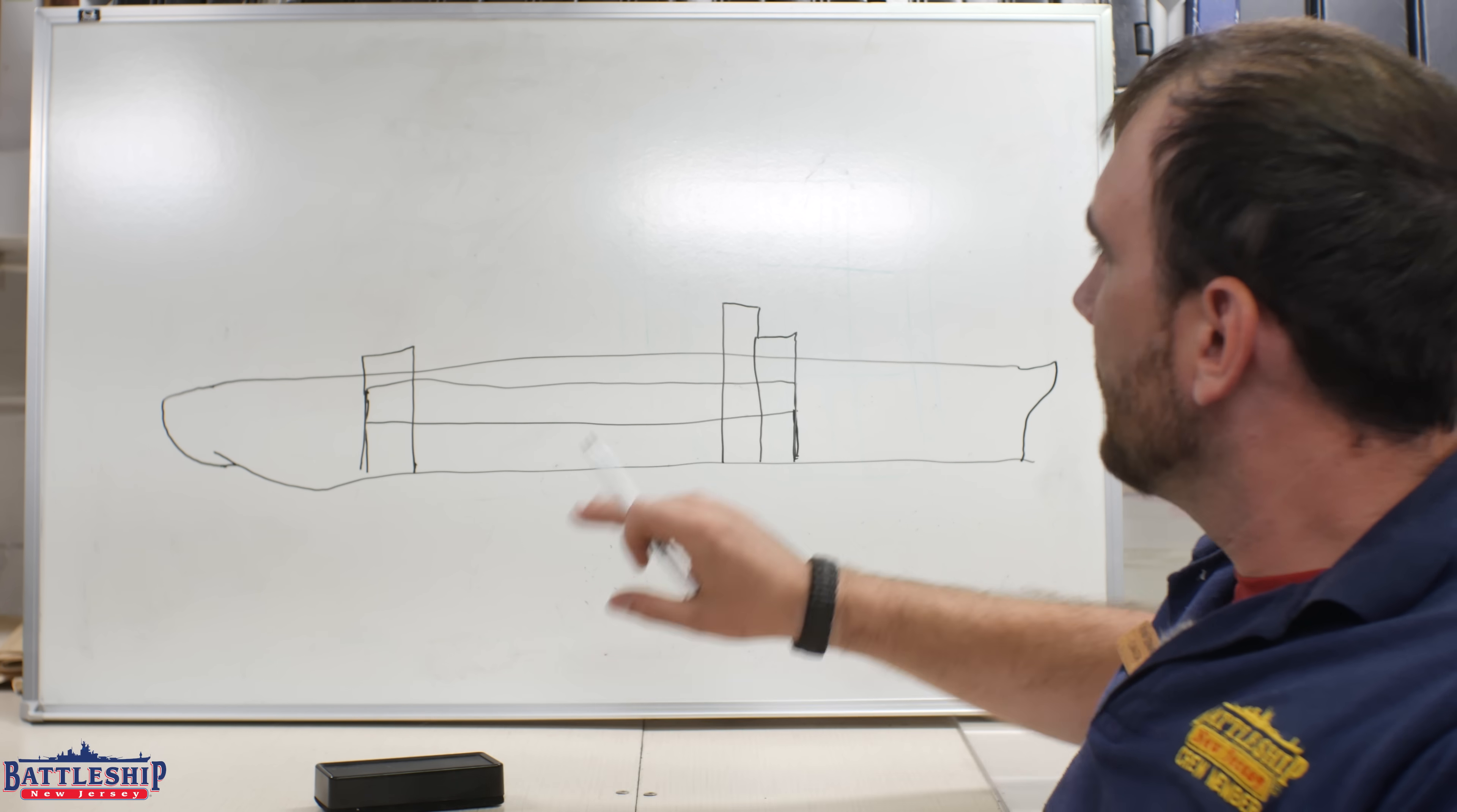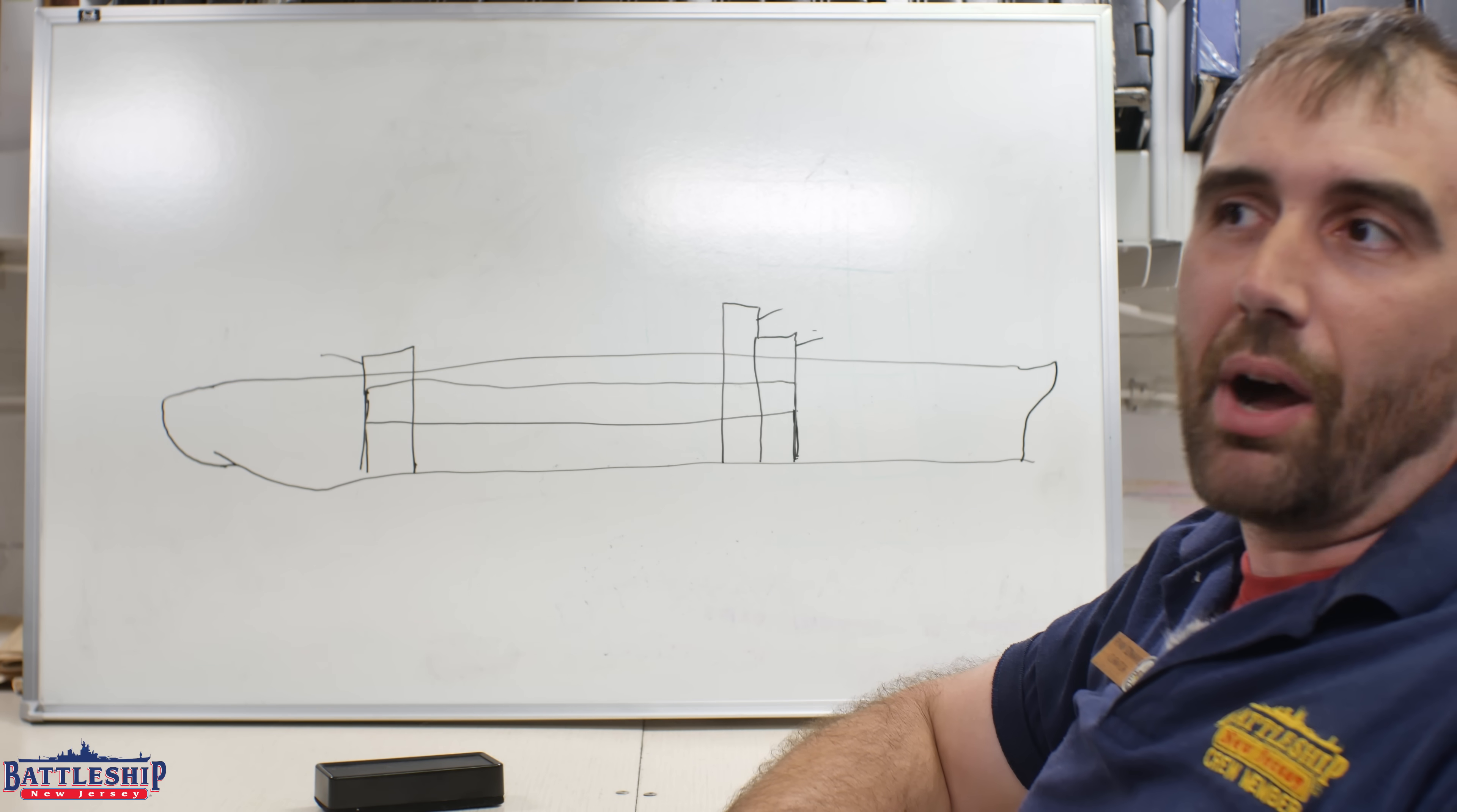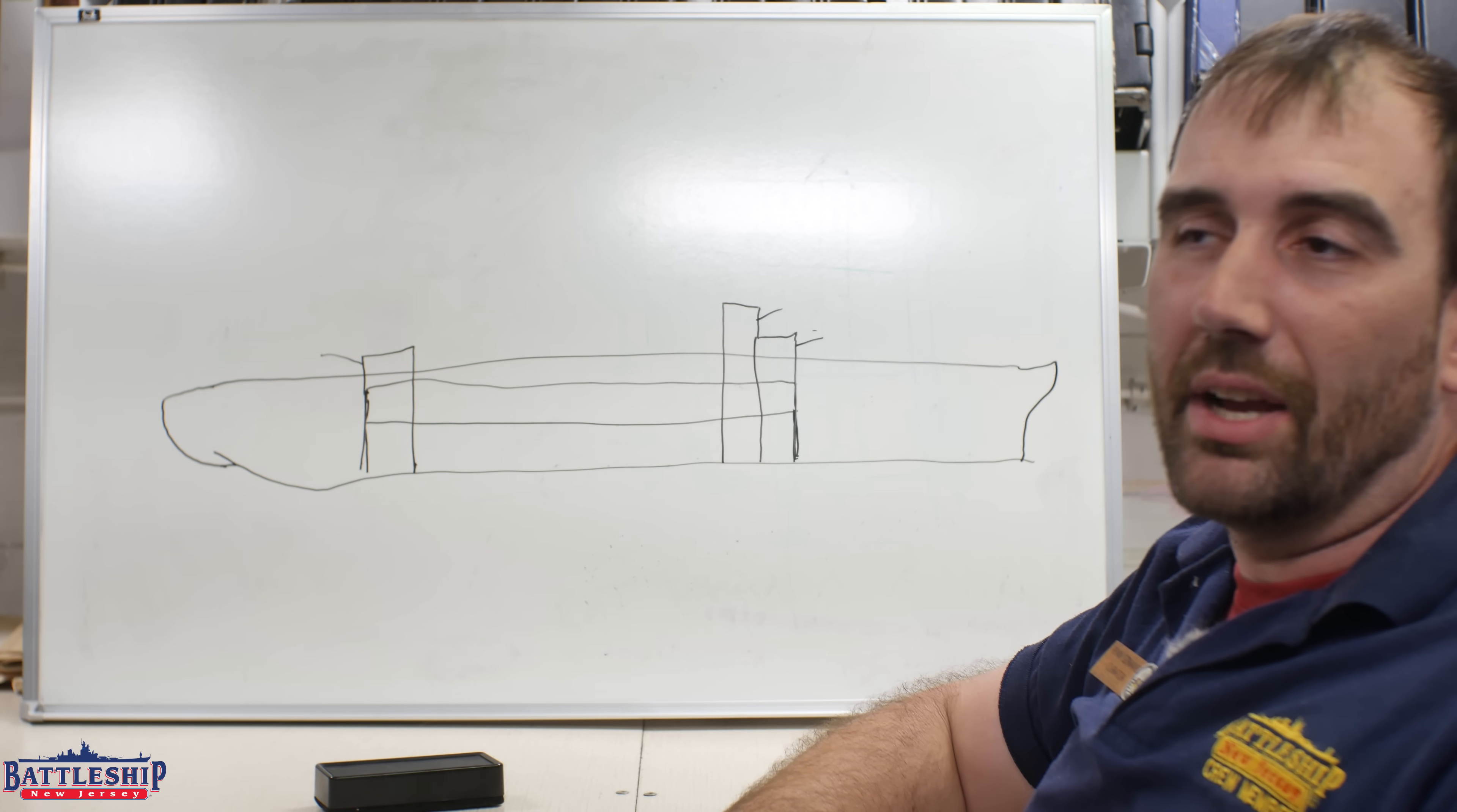Some of the important stuff that ends up outside of this armored citadel are, of course, the gun turrets. So those are separate armored boxes linked to the armored citadel by their barbettes. So ammunition stored down here, being passed up to the turrets, is still protected by the armored box.